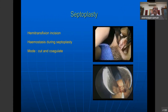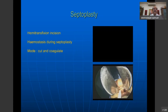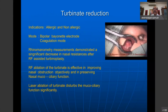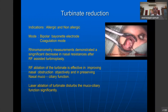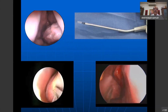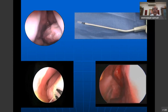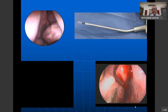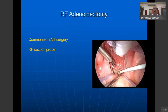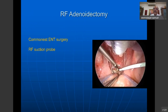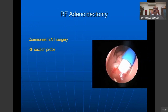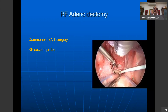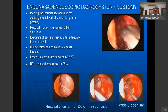Radio frequency has a bayonet applicator that can be used to shrink turbinates. Like co-ablation, in radio frequency you can shrink turbinates completely. Adenoidectomy can also be done using radio frequency with the malleable suction and zero-degree scope to completely remove adenoids. DCRs can be done with radio frequency — especially for opening. Synechiae release can also be done. Masses in the nasopharynx, including vascular masses, can be comfortably removed using radio frequency.